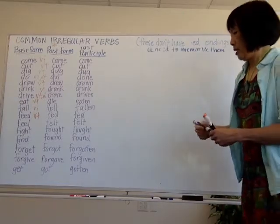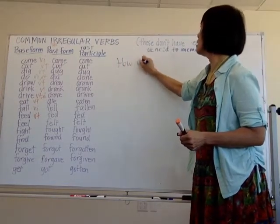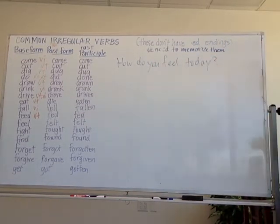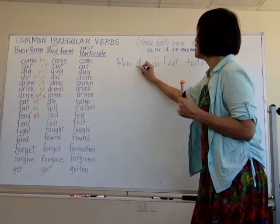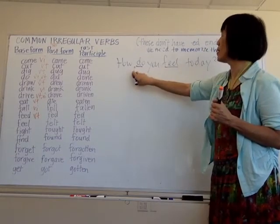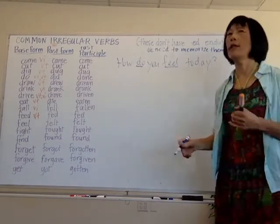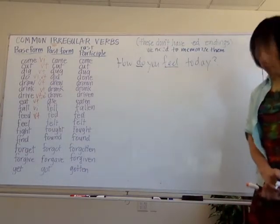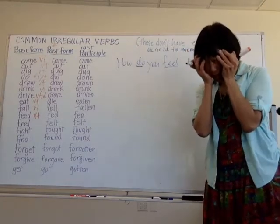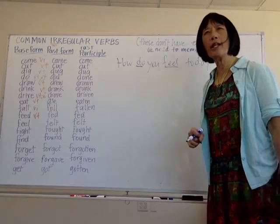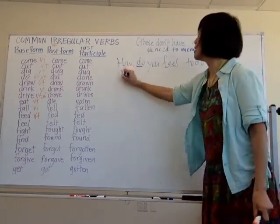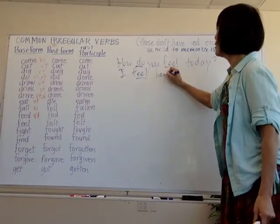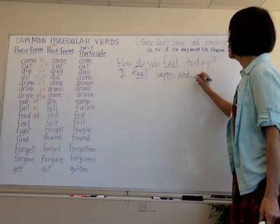'Feel' — how do you feel today? We use the auxiliary 'do' because it's present tense. I feel great, I feel fine, I feel happy, I feel disappointed, I feel tired, I feel worried, I feel anxious. Let's talk about some of these adjectives. Give me some feelings: I feel happy, I feel sad.